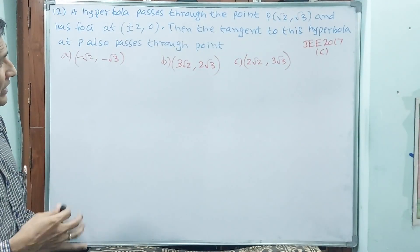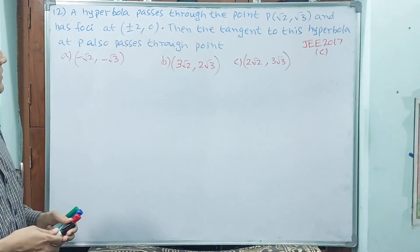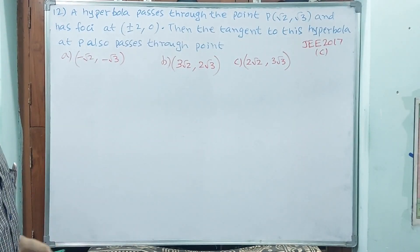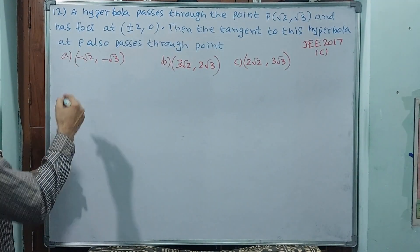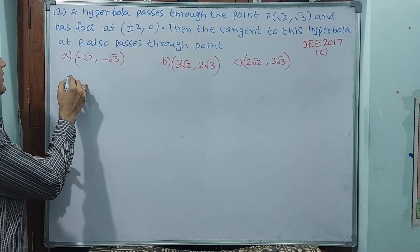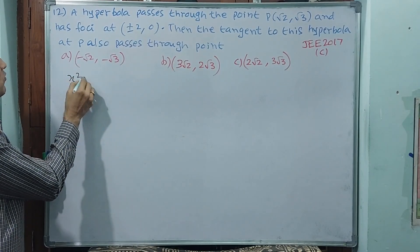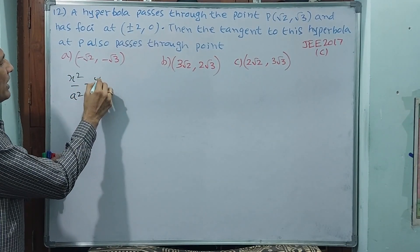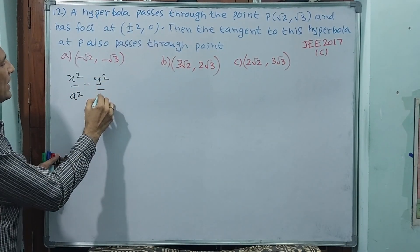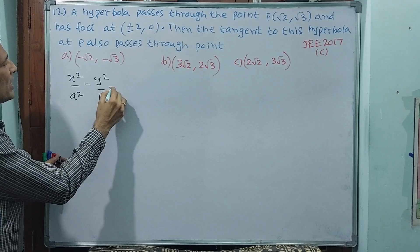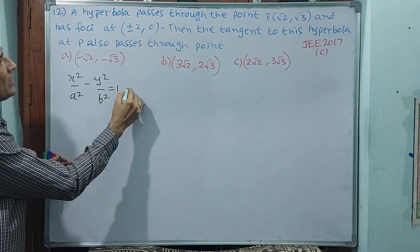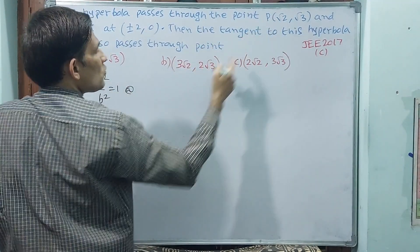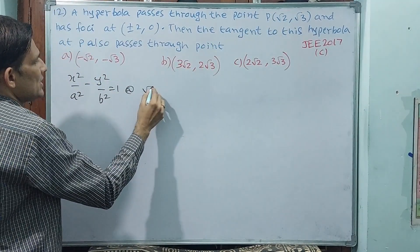Let us see how we are going to get this answer. Take the generalized hyperbola: x squared by a squared minus y squared by b squared equals 1, at point P which is root 2, root 3.